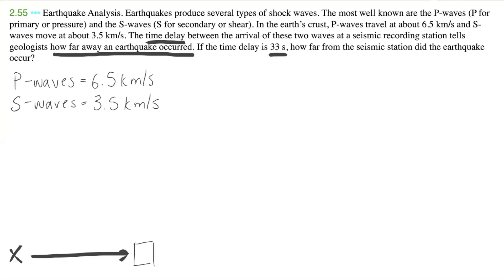And using the information, using the difference between these two, not just direct difference, like 6.5 minus 2.5, but using the time difference between these two waves, we can tell how far the Earth occurred. And we know that this change in time was 33 seconds. So how are we going to do this?